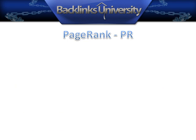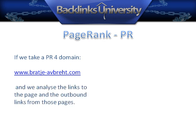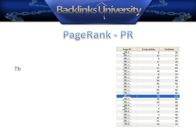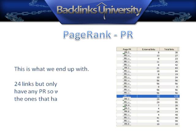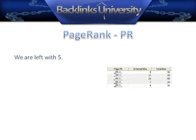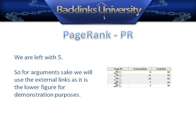This is not the case. If we take a PR4 domain and analyse the links to the page and the outbound links from those pages, this is what we end up with: 24 links, but only 5 of them have any PR, so we discount the ones that have no PR. We are left with 5. So for argument's sake, we will use the external links as it is the lower figure for demonstration purposes.